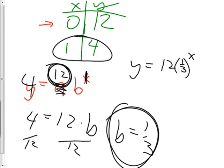We know the start value is 12 and the base is 1 third. I suggested writing that as 1 plus or minus something — would you agree 1 third is the same as 1 minus 2 thirds? That's identical. Why is that good? Because you can see the decay rate. This is not growth, it's decay — decay of 2 thirds, which is about 0.66, or about 66% decay.